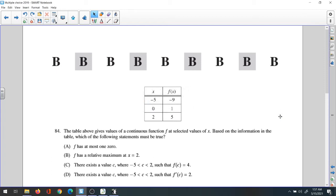Question 84: The table above gives values of a continuous function f at selected values of x. Based on the information in the table, which of the following statements must be true? If you look at the four choices, let's see.